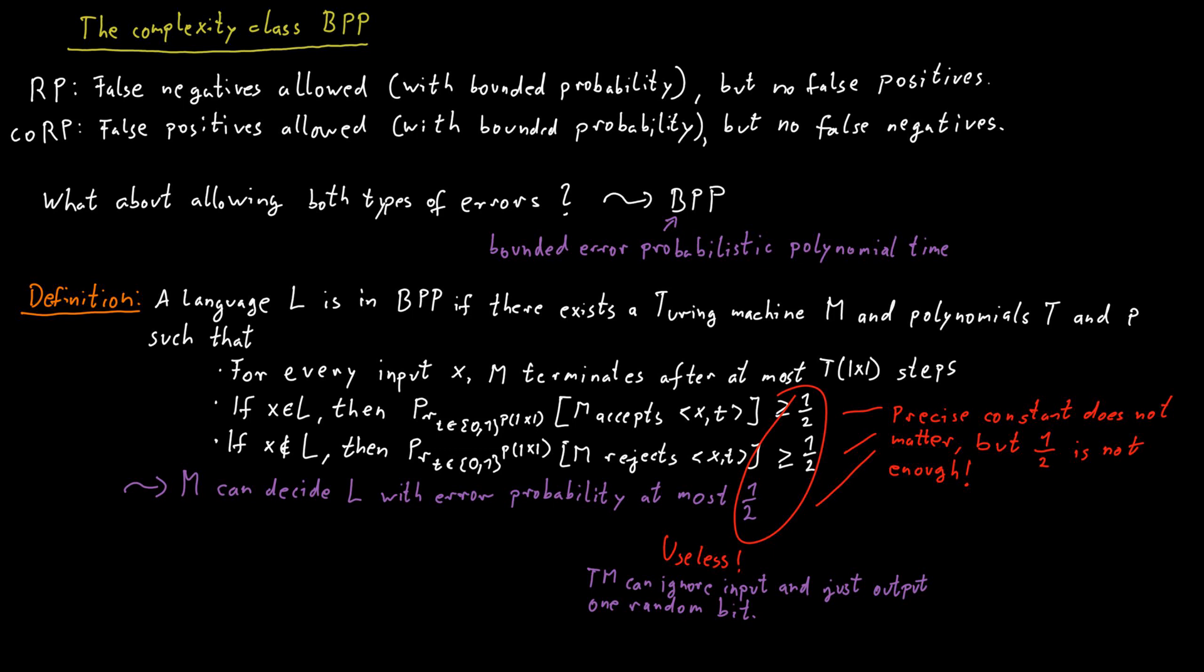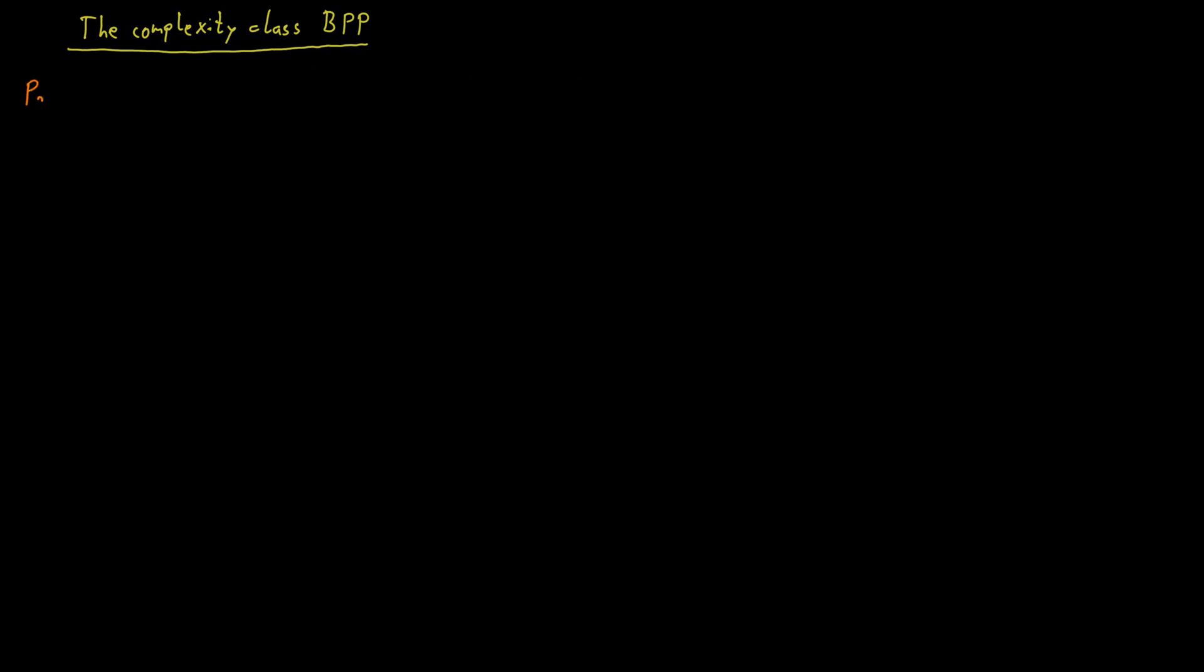It is a bit more complicated than the probability amplification for RP or coRP because of the two-sided errors that we are now allowing. But it's still in principle possible to do something here. We use the following amplification lemma. Let epsilon 1 and epsilon 2 be two constants that lie strictly between 0 and one-half.